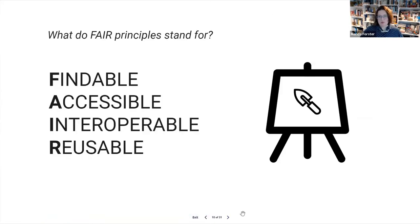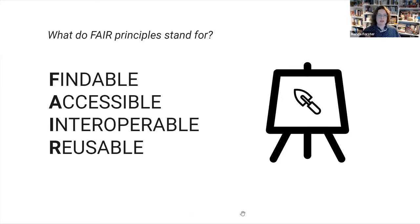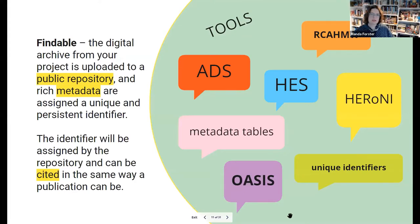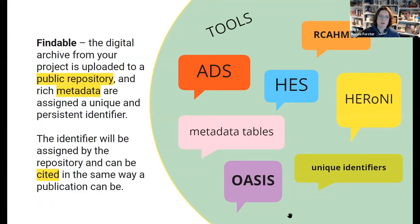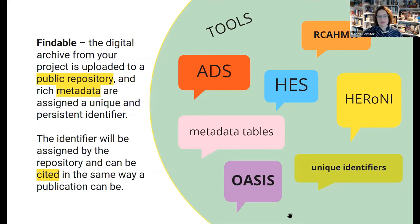Most people will have heard of FAIR principles by now, but it's worthwhile thinking about what those individual words actually mean for us as archaeologists. The four words — findable, accessible, interoperable, and reusable — are all things we can break down and consider from the perspective of what we already have in the heritage sector. For findability, the digital archive from the project is made publicly accessible through a public repository, uses metadata, and is assigned a unique and persistent identifier — something unique that means you can find it and won't accidentally find something else, assigned in the same way as a publication.